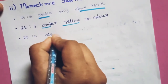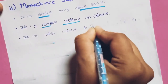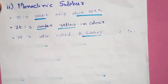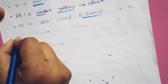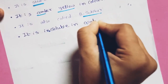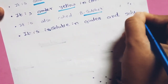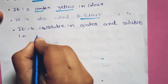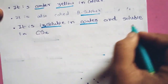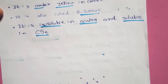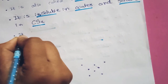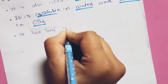Monoclinic sulfur is also called beta sulfur — rhombic sulfur is called alpha sulfur and this one is called beta sulfur. It is insoluble in water, similar to rhombic sulfur, but it is soluble in carbon disulfide and other organic solvents.